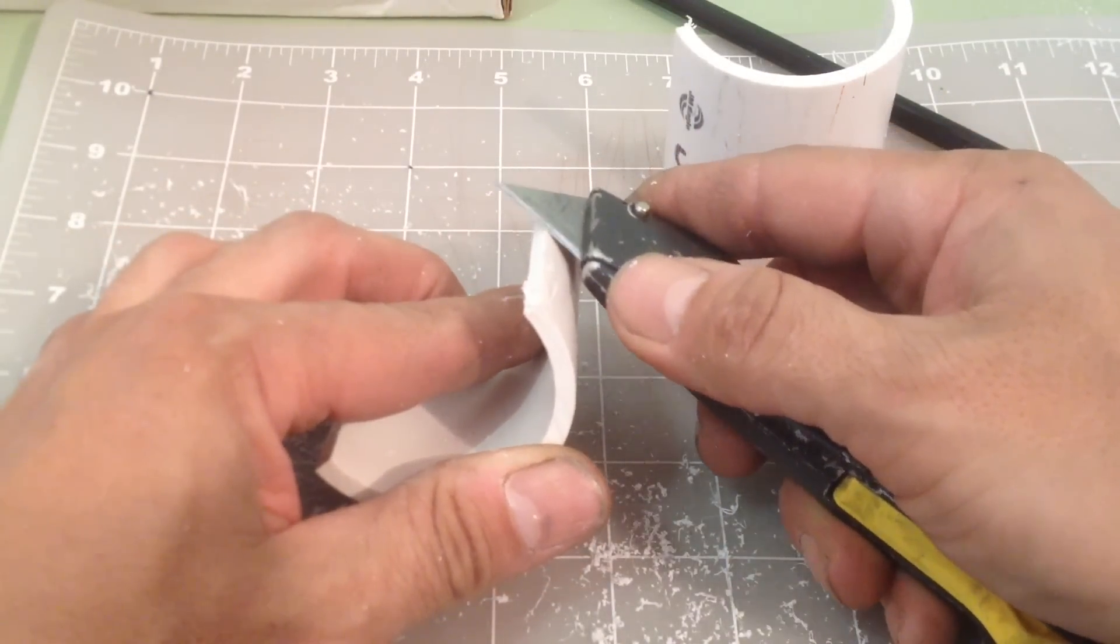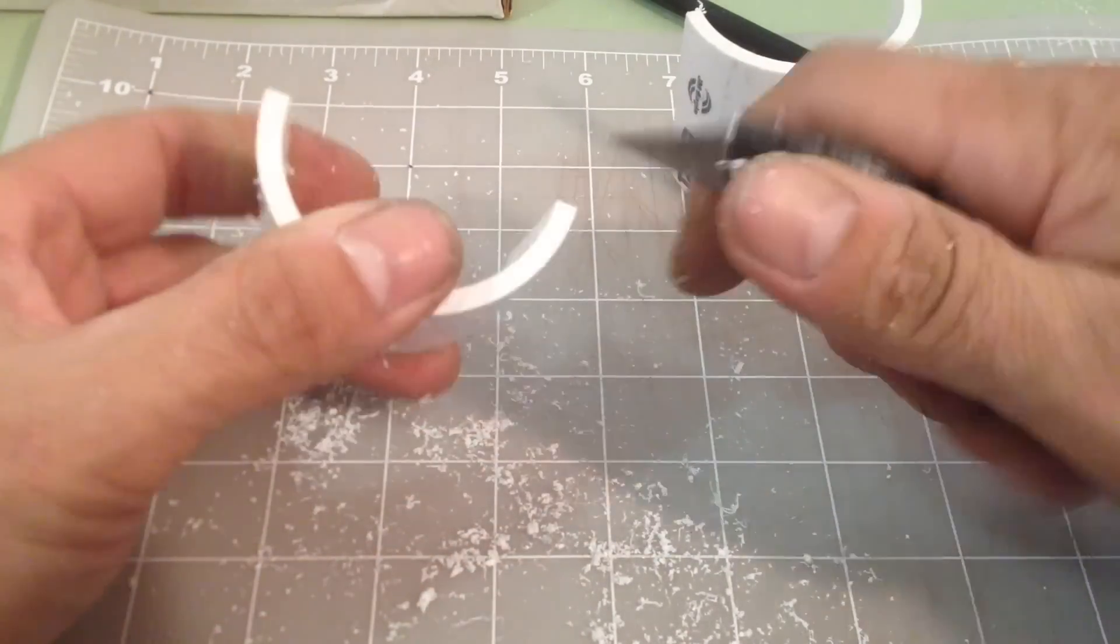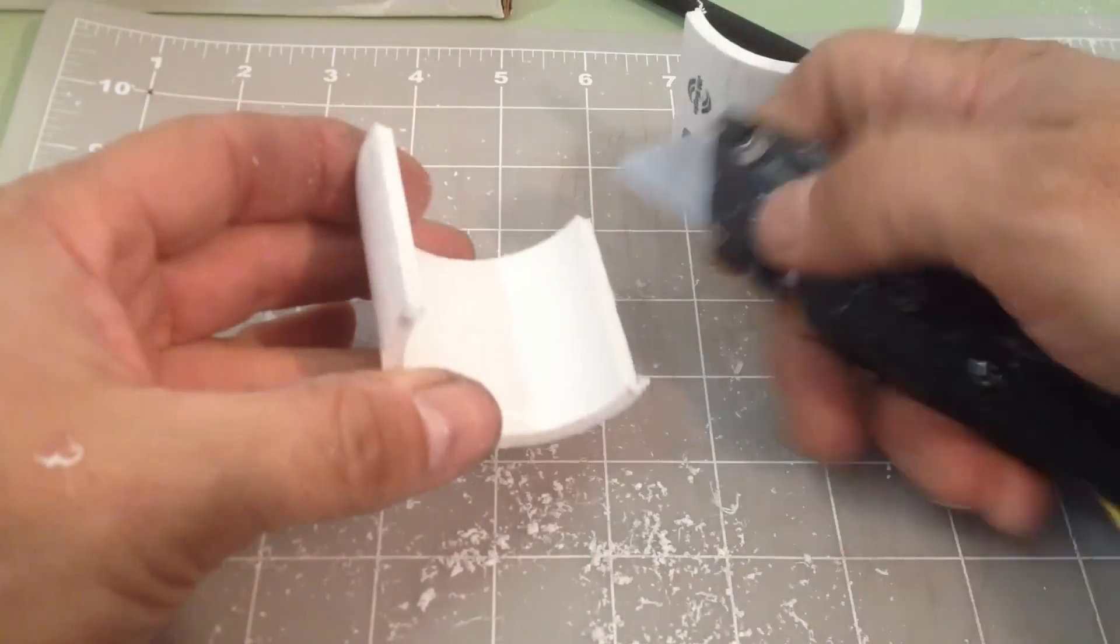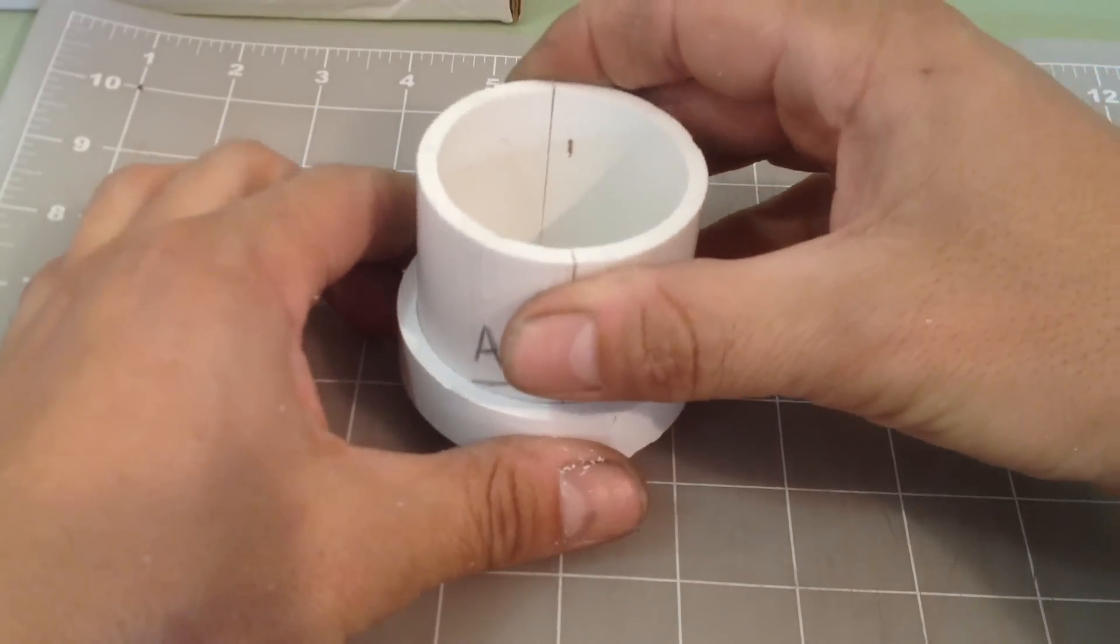I use a utility knife to remove the burrs from the 2 halves. I quickly test fit the 2 halves together with one of the end caps.